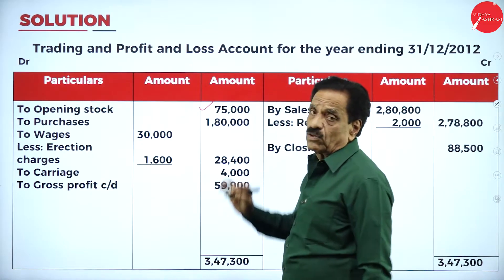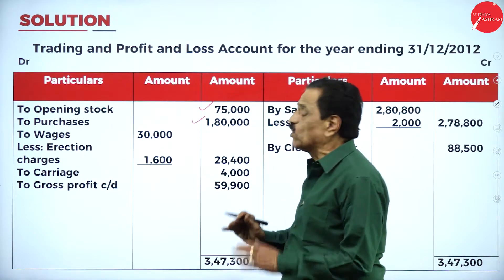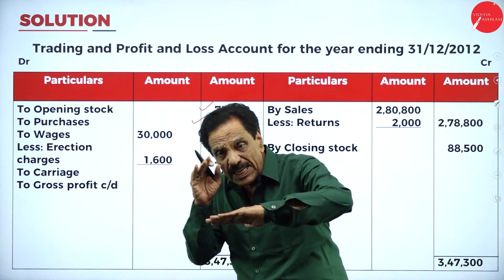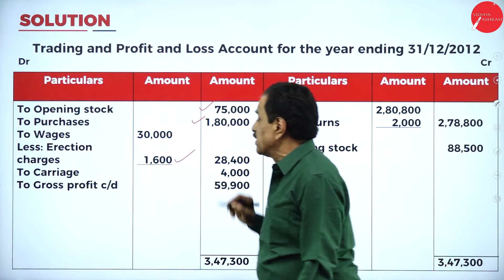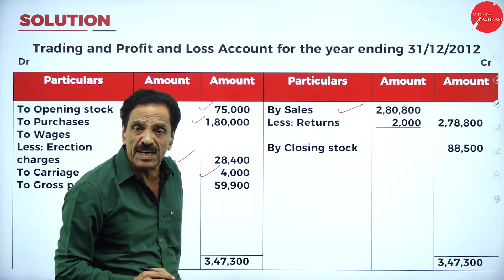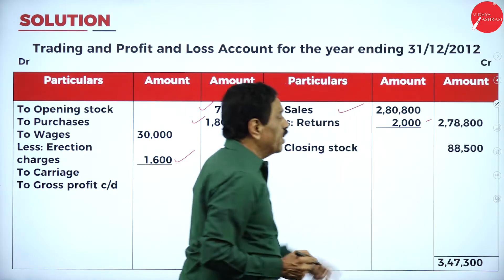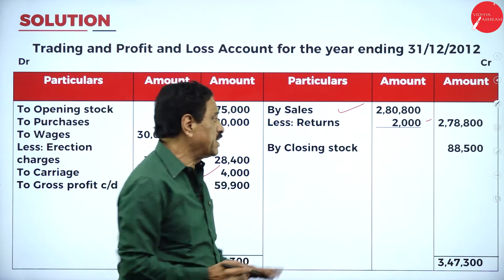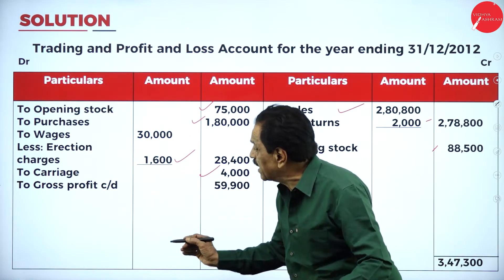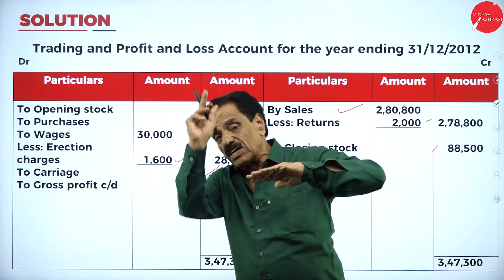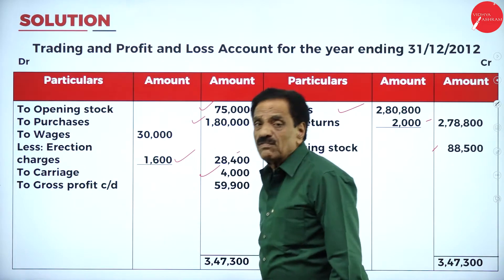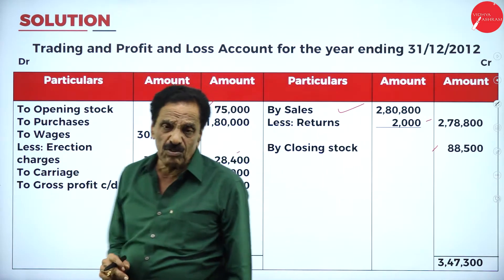Opening stock is 75,000. Purchases are 1,80,000 — no returns. Wages paid are 30,000, but erection charges of 1,600 should be deducted from wages — so wages become 28,400. That 1,600 is added to machinery. Carriage means carriage inward: 4,000. Sales are 2,80,800; return inward is 2,000, so net sales are 2,78,800. Closing stock from adjustment is 88,500.